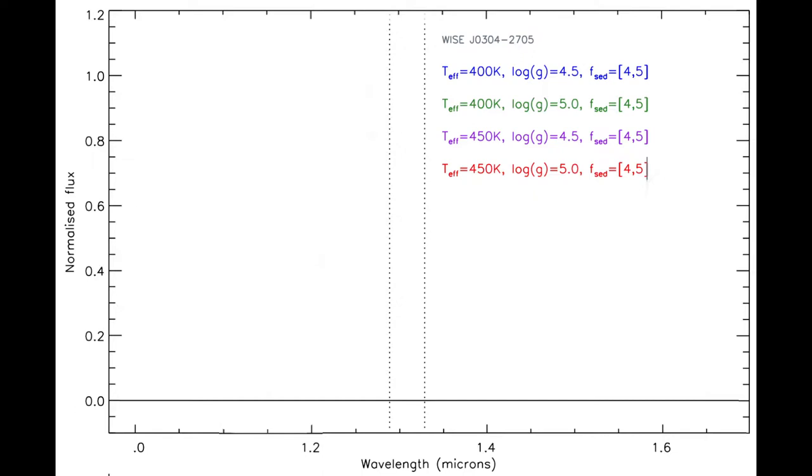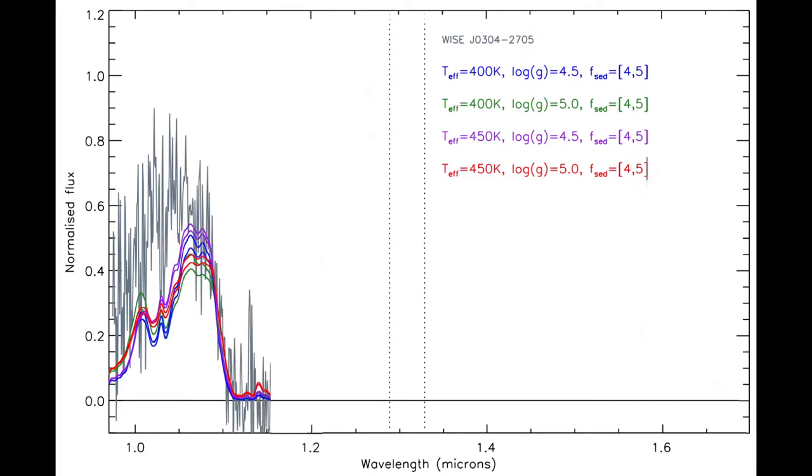Only 20 other Y-Dwarfs have been discovered to date. Amongst these, WISE J0304-2705 is defined as peculiar due to unusual features in its emitted light spectrum.